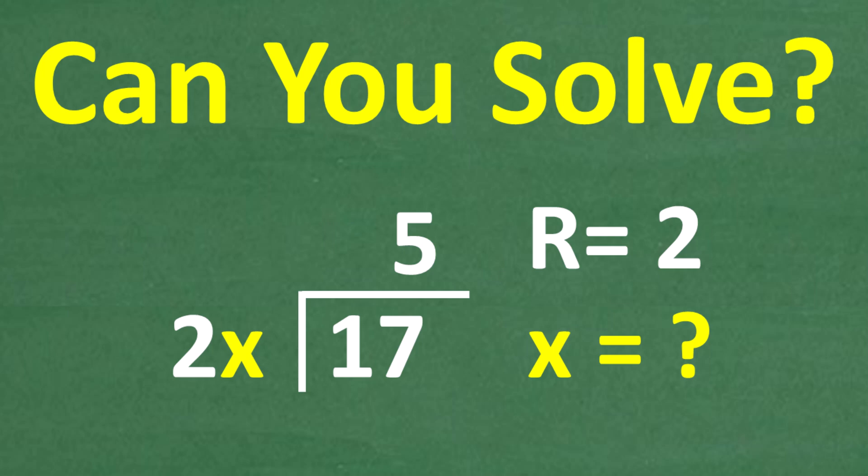I'm going to tell you what it is here. We have 17 divided by 2x, and the answer is 5 remainder 2. And the question here is, what is x equal to? All right, so that is the problem. If you can figure this out, go ahead and put your answer into the comment section, and I'm going to show you two ways that you could solve this problem.